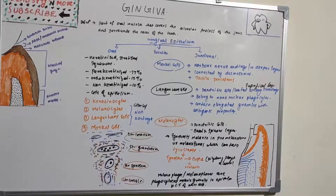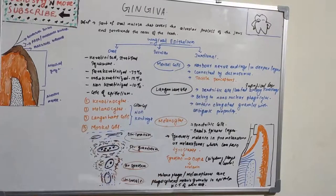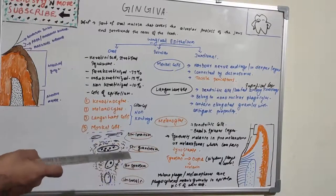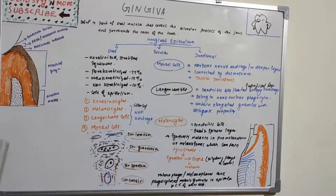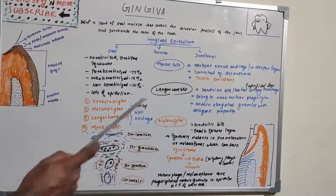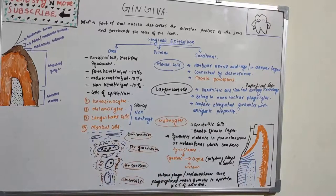Langerhans cells are dendritic cells located among keratinocytes at all suprabasal layers. They belong to the mononuclear phagocyte system, also known as the reticuloendothelial system. They contain elongated granules and are considered macrophages with possible antigenic properties, involving them with immunity.